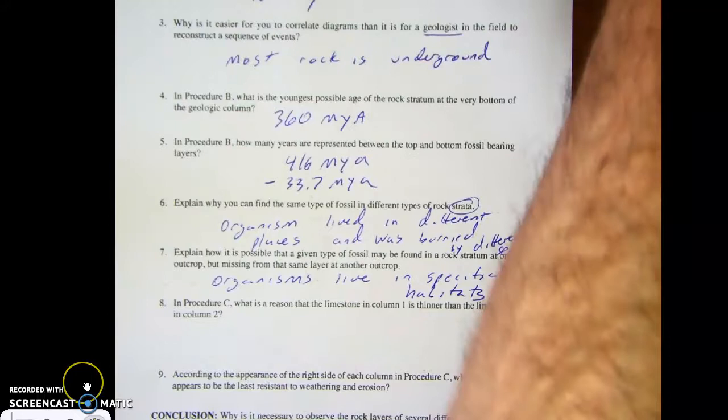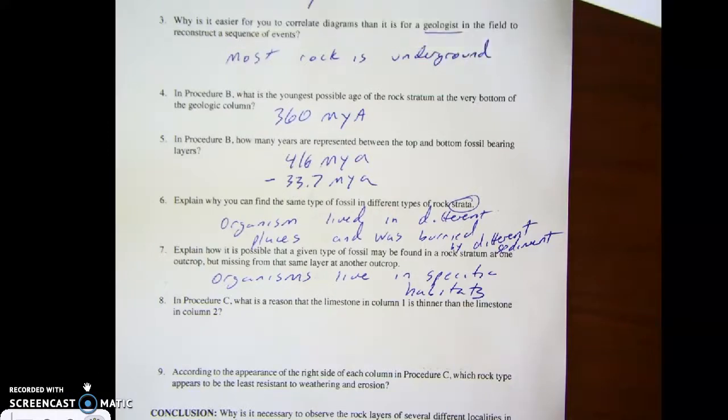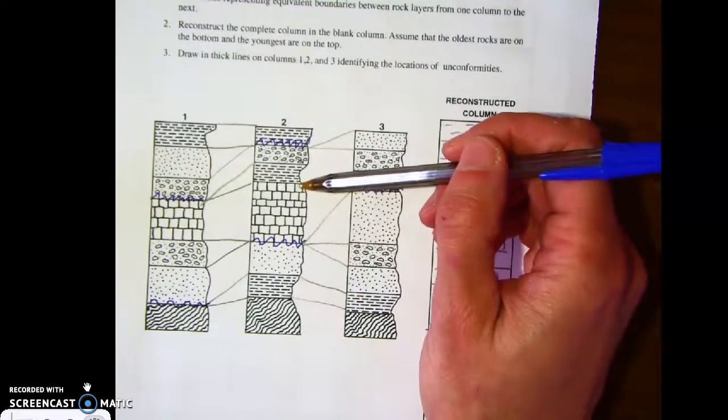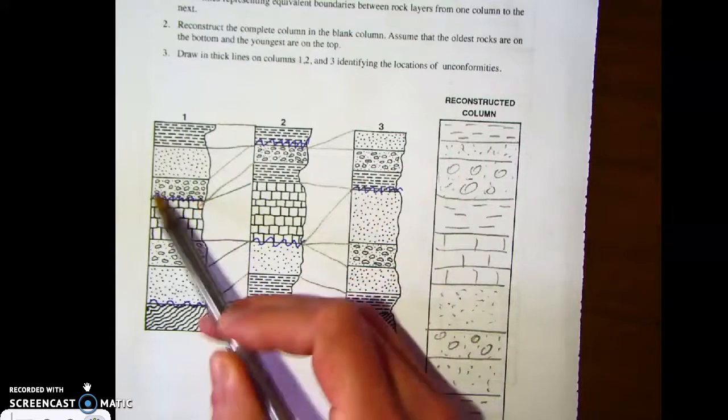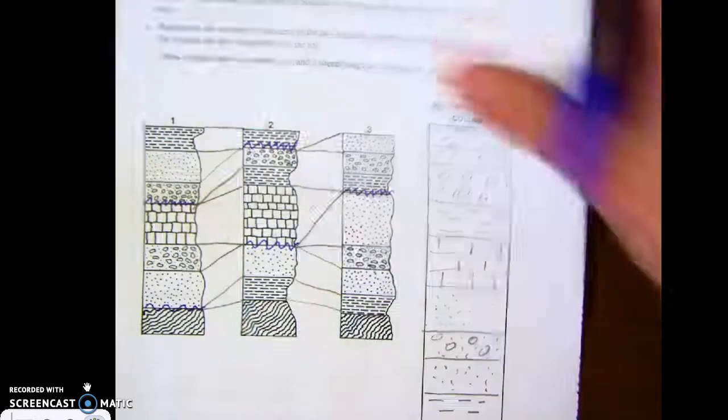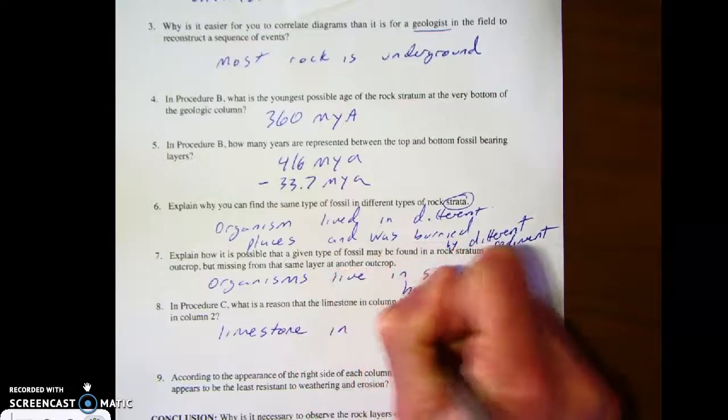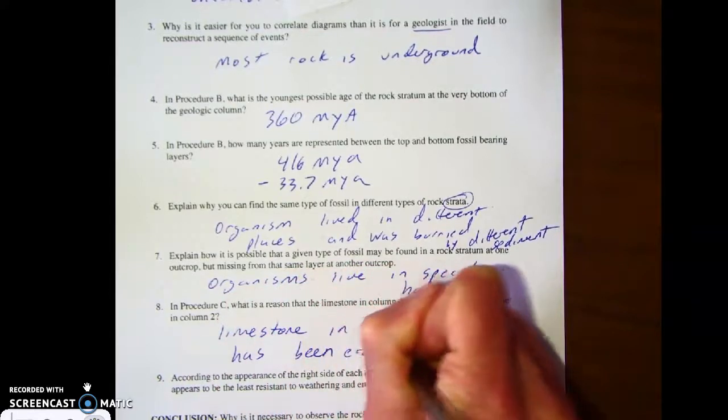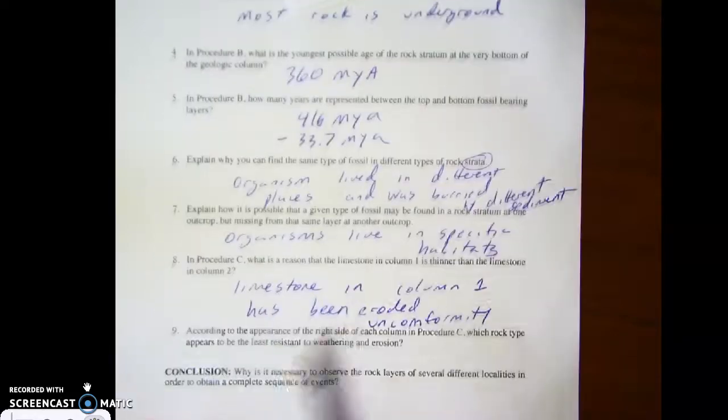If we look at procedure C, the part we just did, it says what is the reason that the limestone in column one is thinner than the limestone in column two? So if we look at the limestone here, this limestone layer is not as thick as it is here. Well, it's probably because the limestone in column one has been eroded. We have an unconformity at the top. So some of the limestone in column one has been weathered and eroded away. Again, there's that unconformity at the top of the limestone in column one.